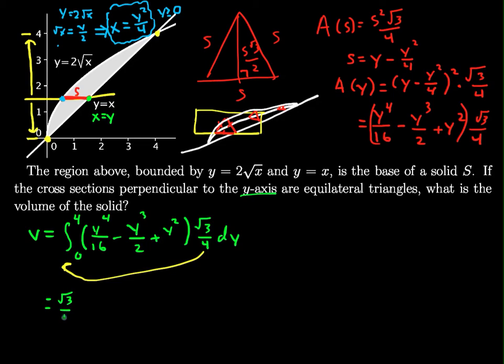Let's bring this out to the front and take an antiderivative. This will equal root 3 over 4 multiplied by: y to the fifth over 80 minus y to the fourth over 8 plus y cubed over 3, evaluated from 0 to 4.